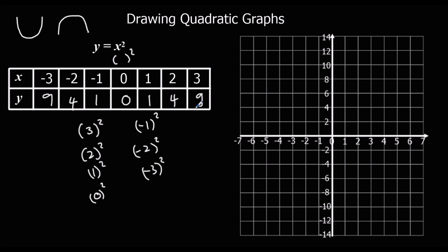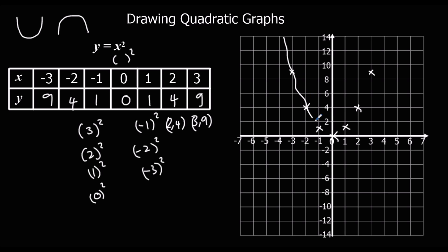So when we've got these, these are our coordinates — our x and y coordinates. So: (3, 9), (2, 4), (1, 1), (0, 0), (−1, 1), (−2, 4), (−3, 9). We can see that it's forming a nice parabola, a nice U shape, a smiley face shape — so we know we haven't made a mistake. If it didn't form that shape, we would have made a mistake and we'd go back and check.